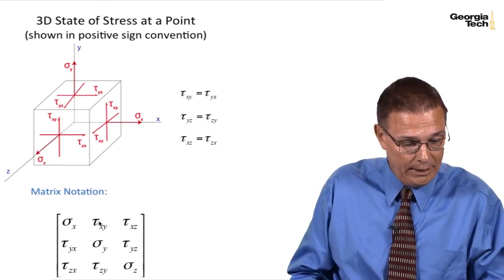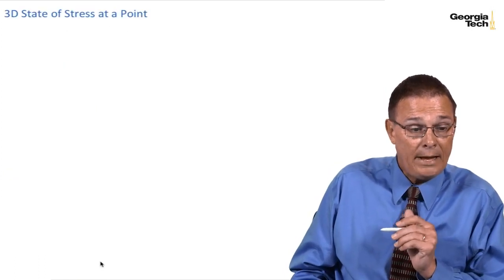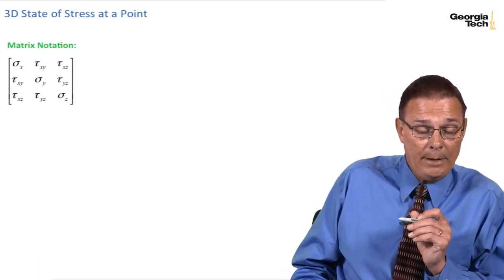And so I can put my tensor or my state of stress in a matrix. Remember, these off-diagonal terms are equal by equilibrium. And here's the matrix notation.